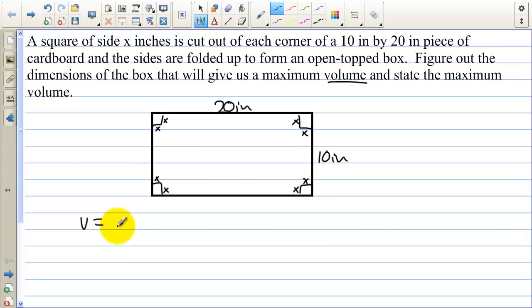Now, the volume of a box, or the volume of a rectangular solid, is length times width times height. In our case, the length is 20 inches. That's 20 inches, and we're cutting out an x on each side. So the length is 20 minus 2x. The width is 10 minus 2x, and if we were to fold along this line here, the height of the box would be x.